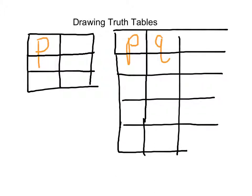The reason for that being P and Q could both be true, they could both be false, one could be true, one could be false. So with two statements, you will always have four rows.